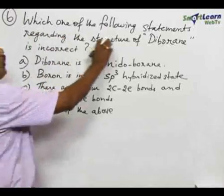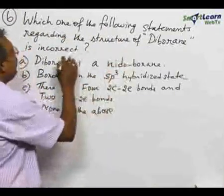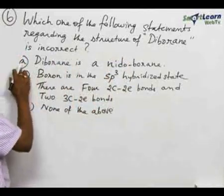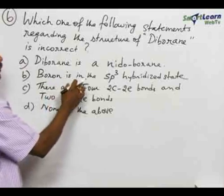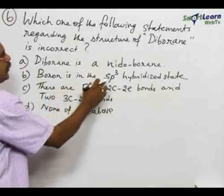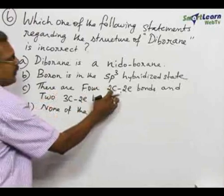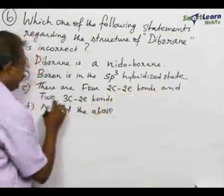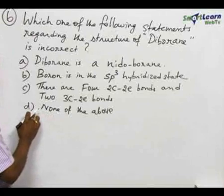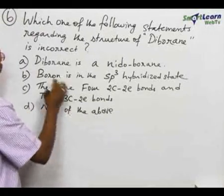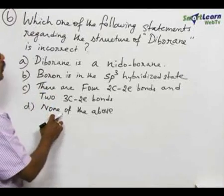Number 6: which one of the following statements regarding the structure of diborane is incorrect? Option A: diborane is a nido-borane. Option B: boron is in the sp3 hybrid state. Option C: there are four two-center two-electron bonds and two three-center two-electron bonds. Option D: none of the above. If all three statements are correct, then only we can select this option.